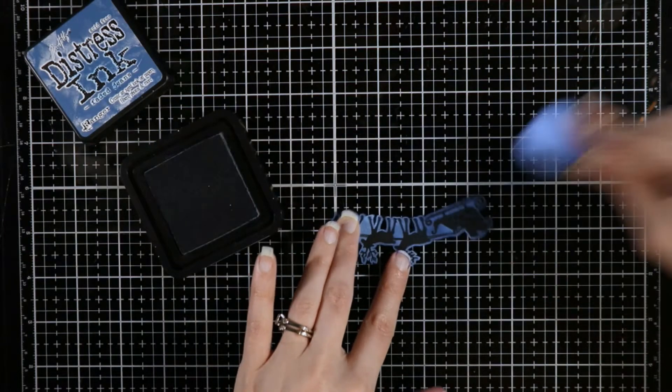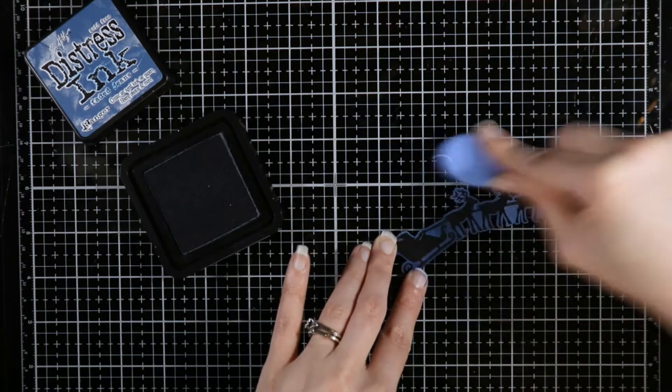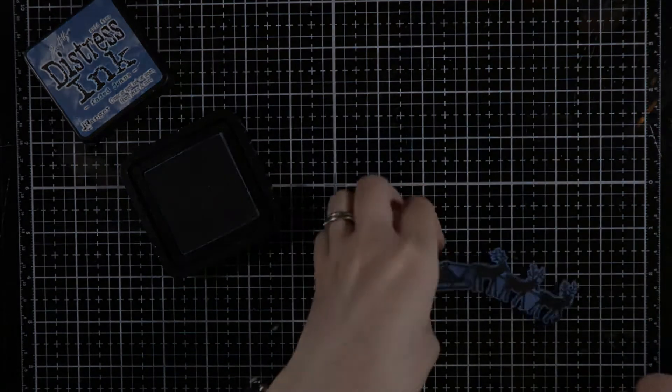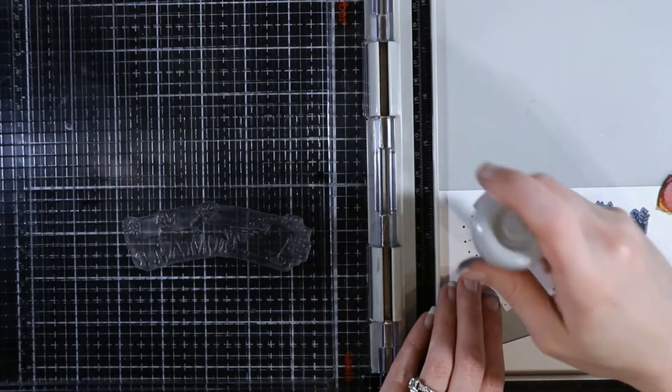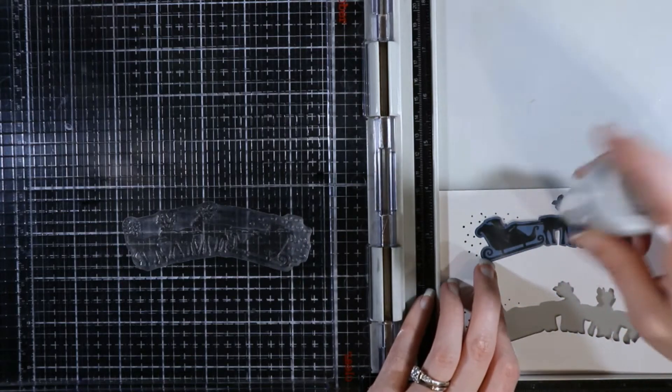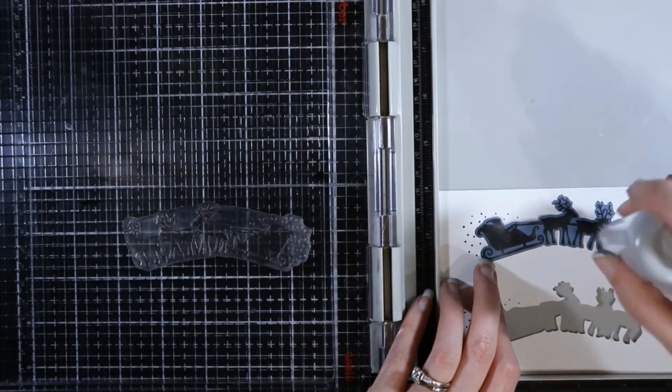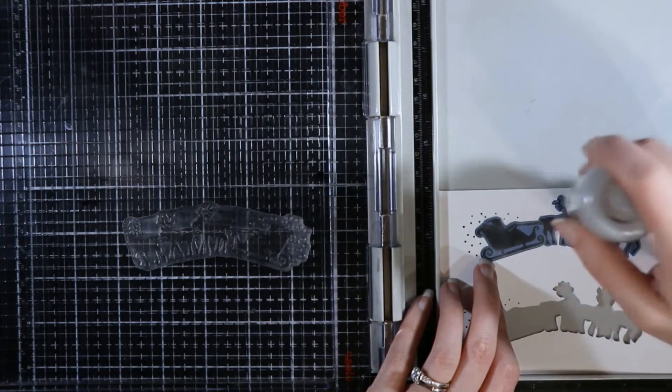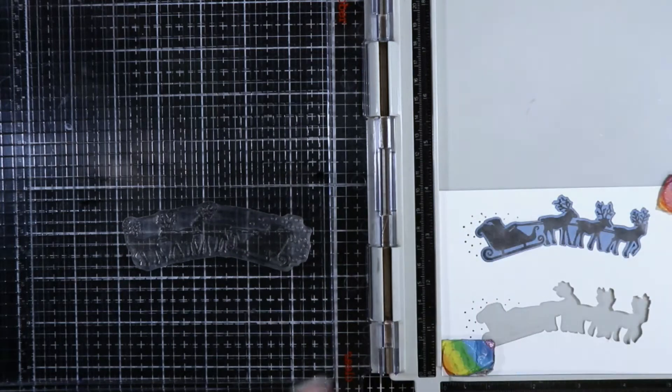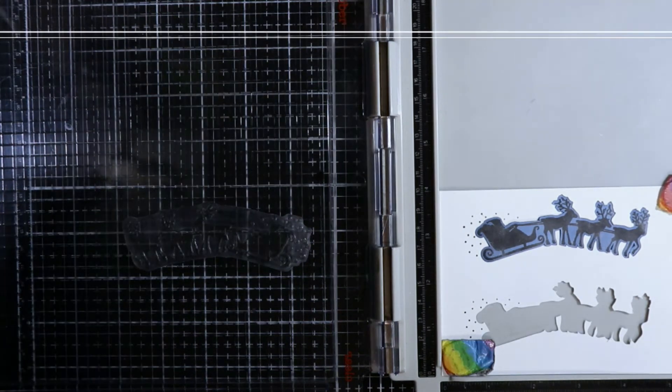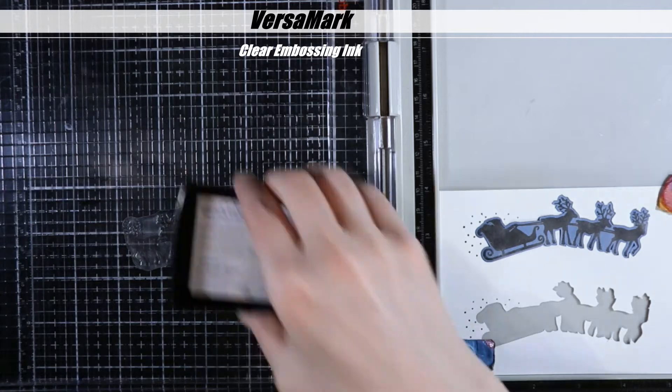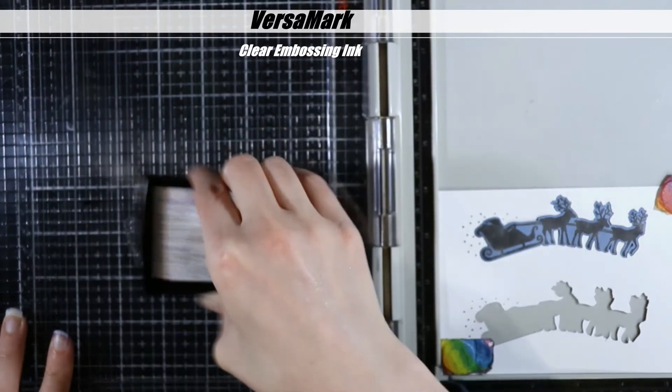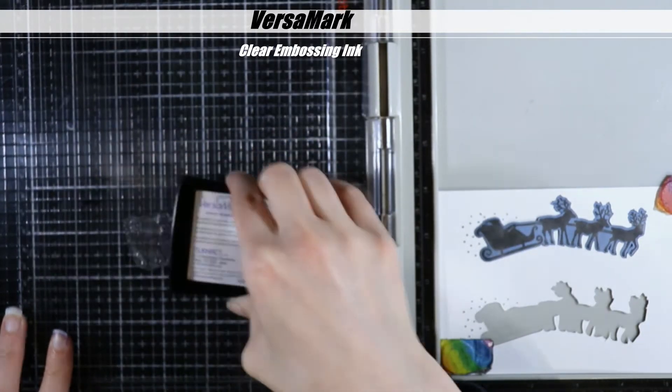This is the second time I'm doing this. I embossed first and then ink blended on the background, and I did not line up my stamp perfectly when I embossed, and I ended up with a white halo. So this time I decided to be smart and ink blend on the background first and then emboss, that way I wouldn't get that white halo if I did not line up my stamp perfectly. Now I'm going to stamp my stamp in Versamark so I can heat emboss the holographic embossing powder over the top.